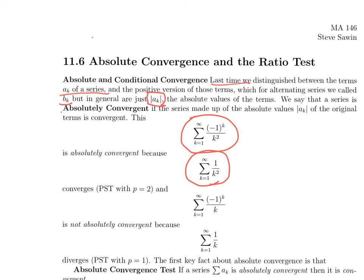We're going to say that a series is absolutely convergent if its positive version, its absolute value, is convergent. So, for example, the series sum of (-1)^k/k^2 is absolutely convergent, because the series sum of 1/k^2, its positive version, is a p-series with p=2, which means it converges.